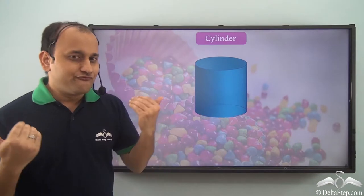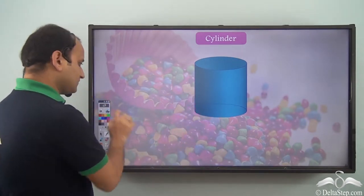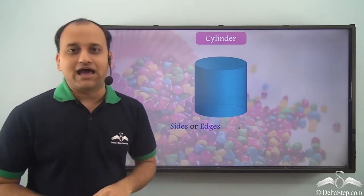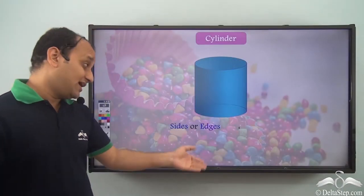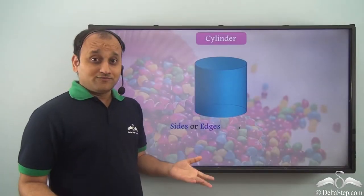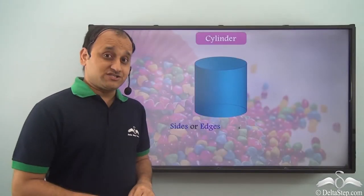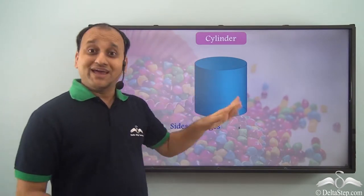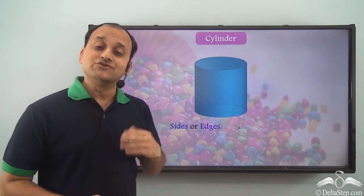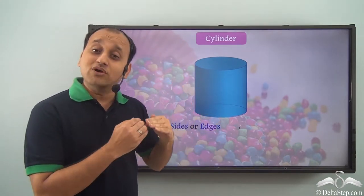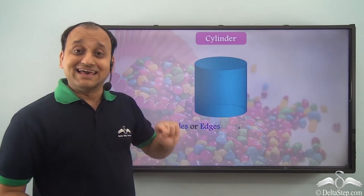Now let's look at one more shape — that is cylinder. How many sides or edges does a cylinder have? In the case of a cylinder, again, we do not have any vertex. So does it have zero edges? Not really. When you have a shape in which there are no vertices, then you need to see how many faces it has. If that particular shape has more than one face, then the joining line between two faces is the edge.